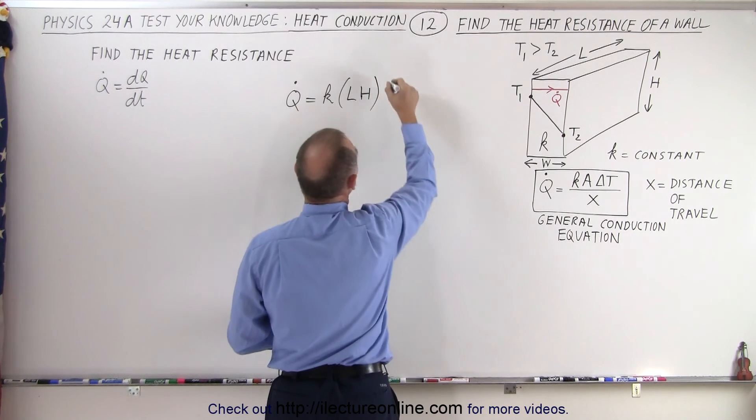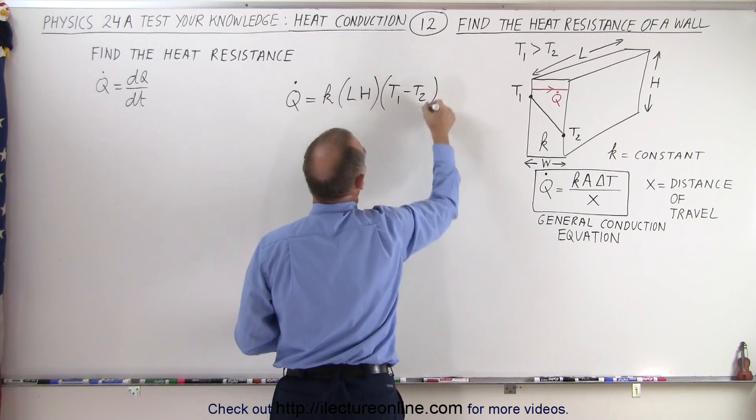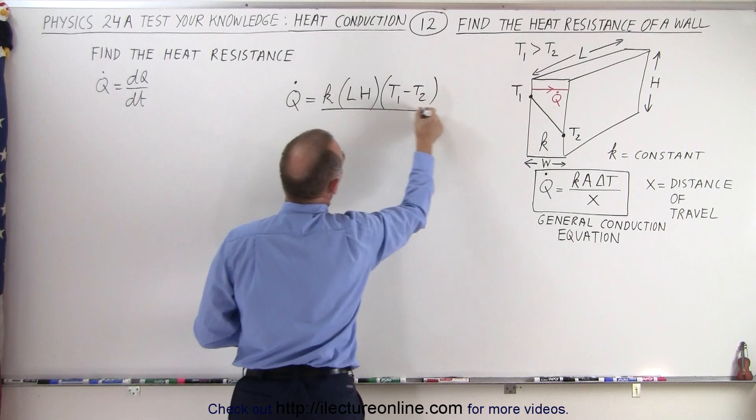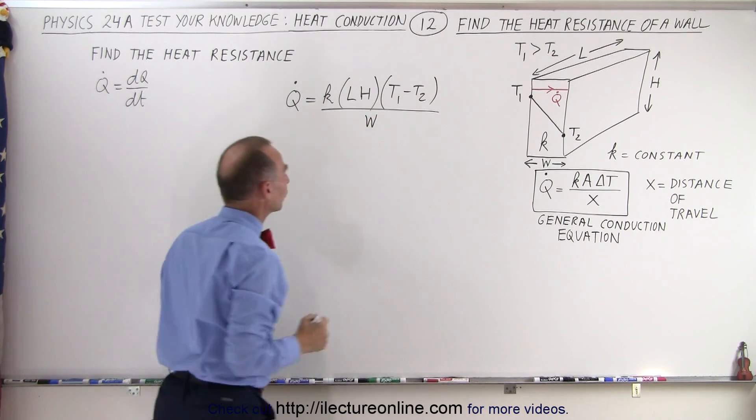And the delta T will be the difference between the left side and the right side. So it would be T1 minus T2. And we divide all that by the distance of travel, which in this case would be W, the width of the wall.